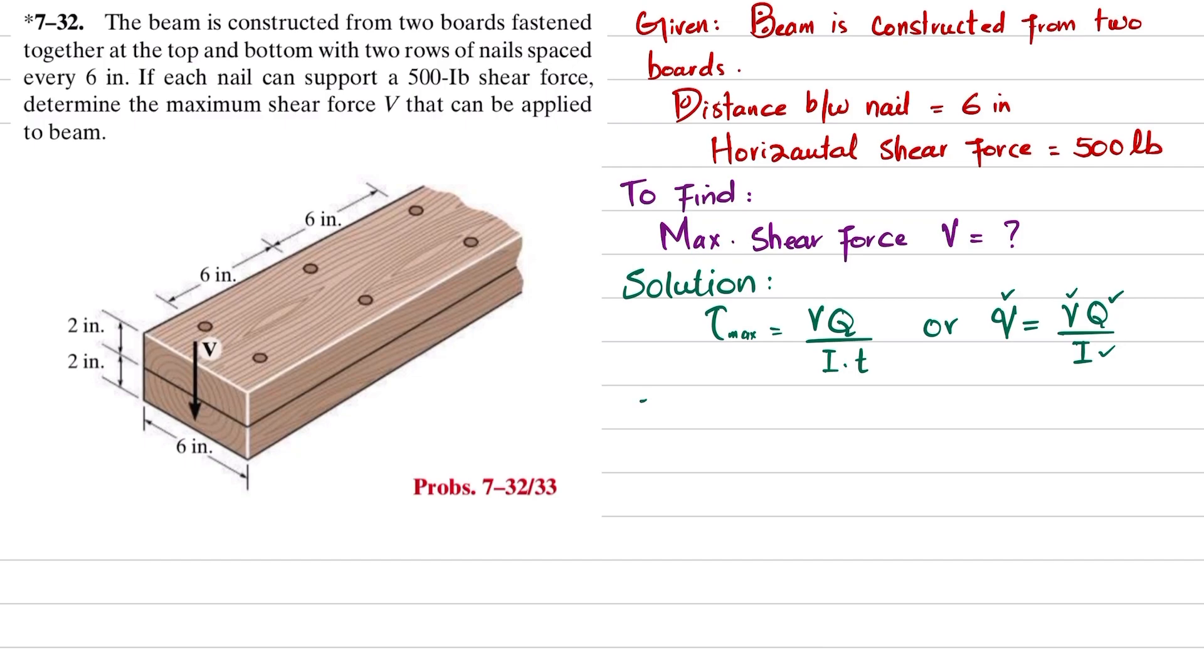First we will find the section properties, and that section property is I. So I is equal to, for rectangular or square, 1 over 12 b h cubed. You can see this 6 inch is its breadth and this is its height.